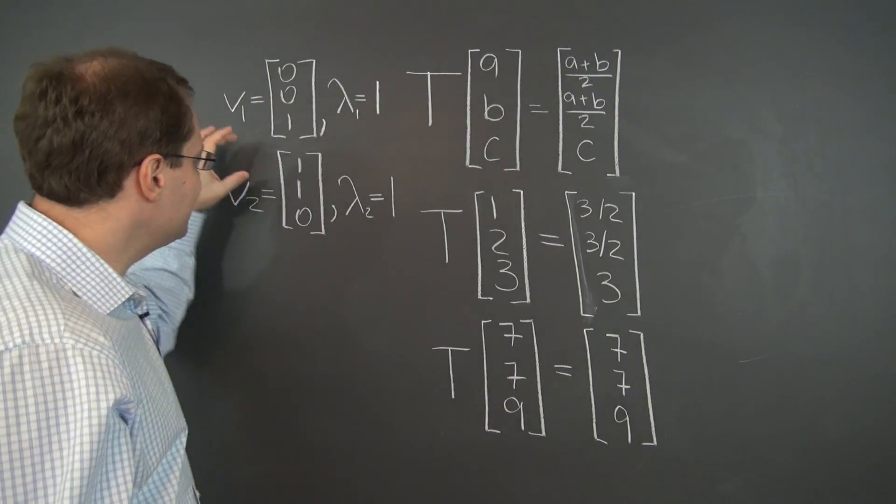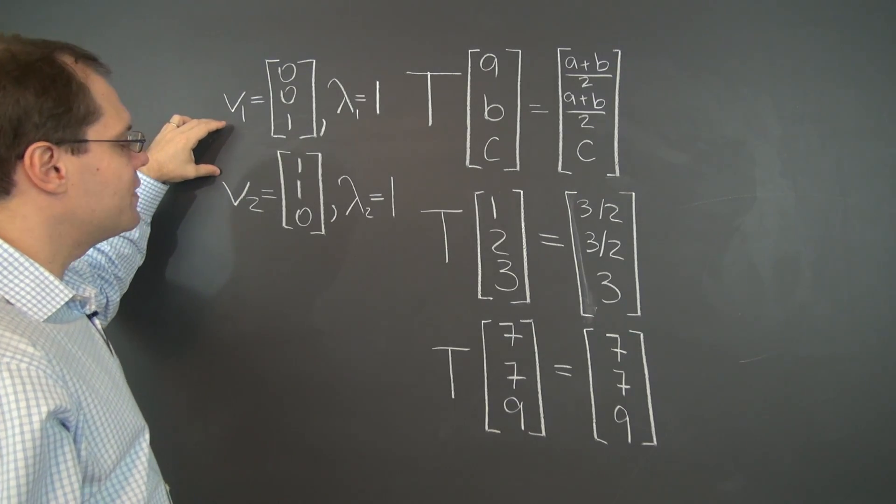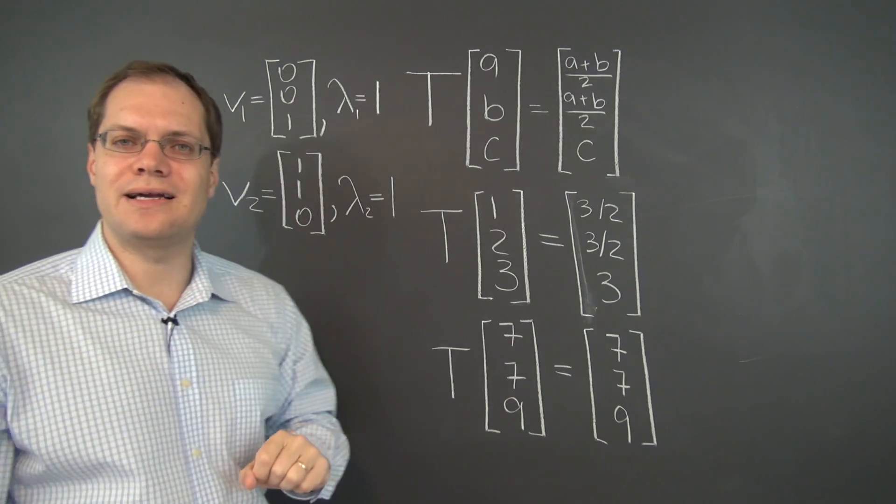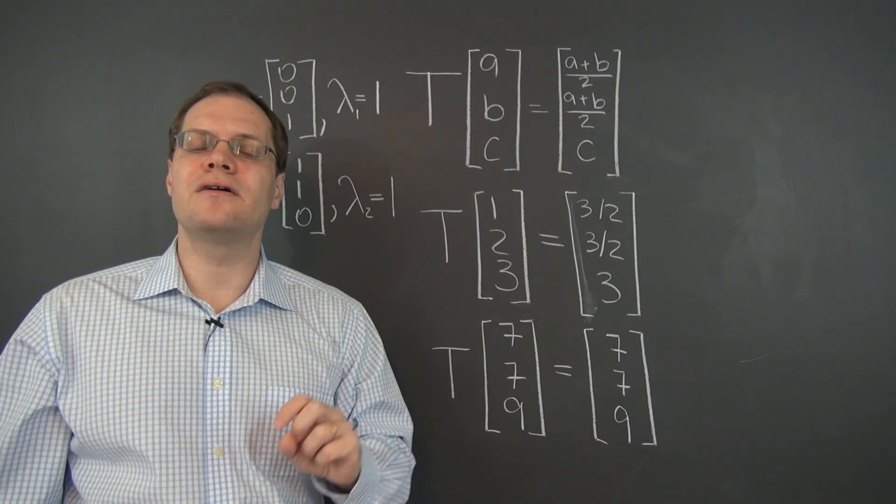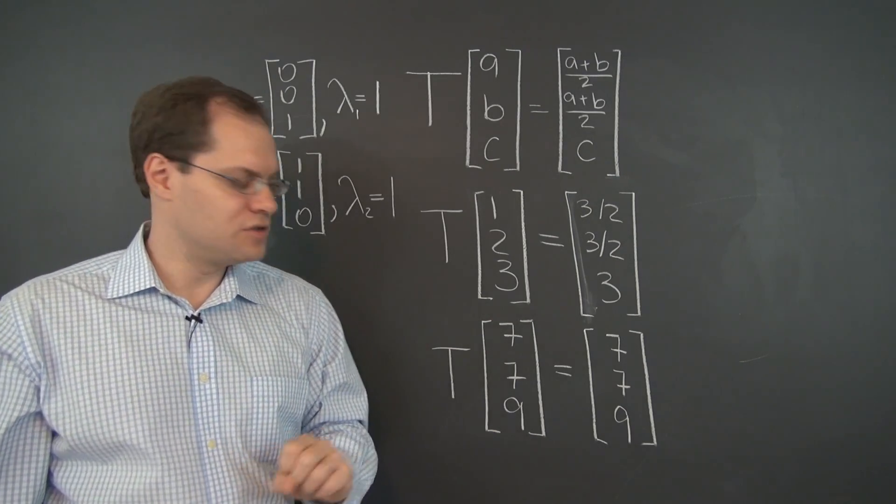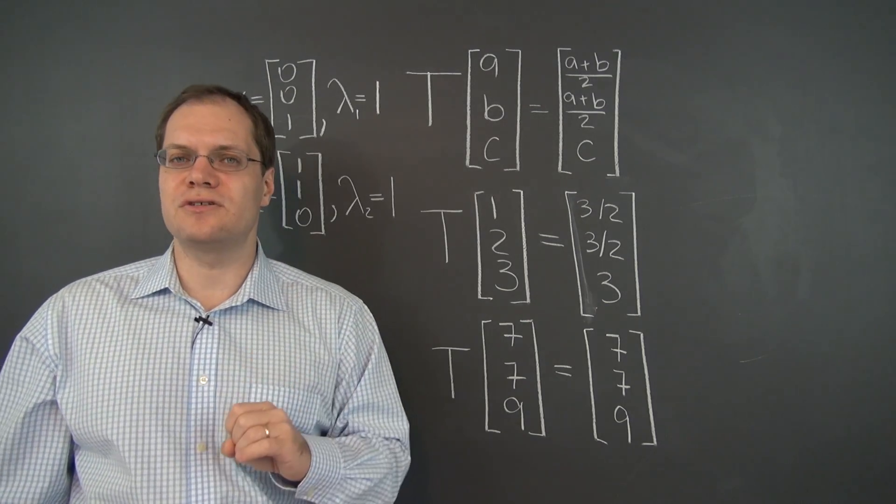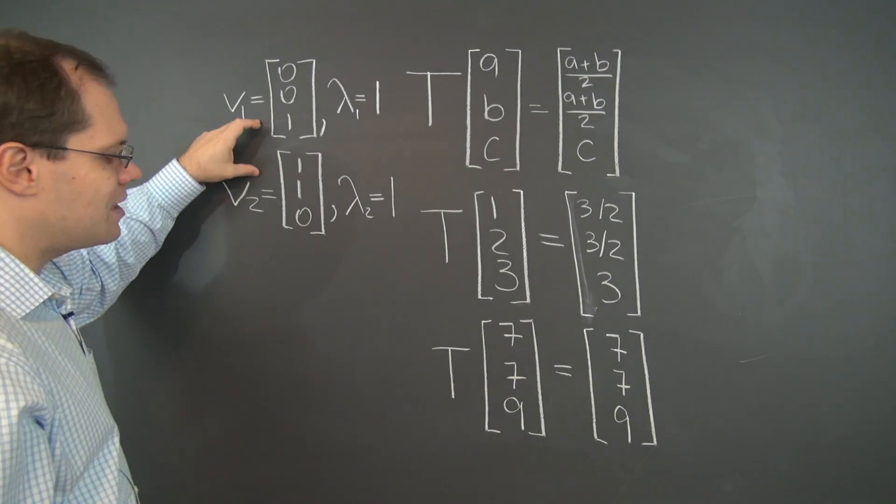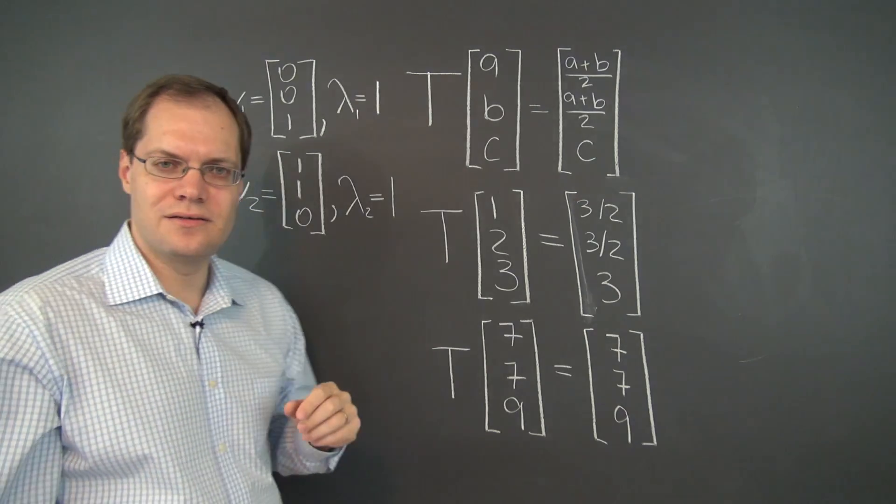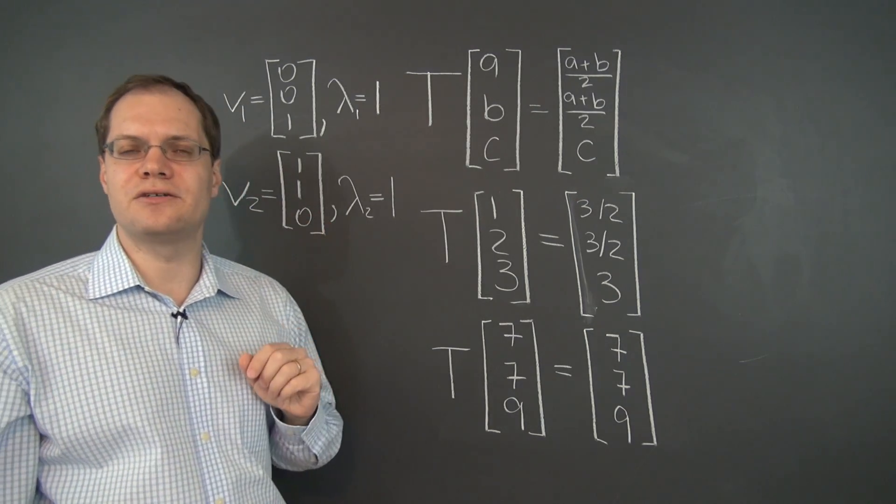Then any linear combination of eigenvectors corresponding to that eigenvalue is another eigenvector. So that's why 7, 7, 9 is an eigenvector as well. It's a linear combination, 7 of this one, 9 of this one, clearly, of these two eigenvectors.